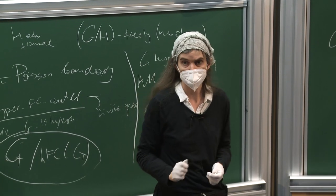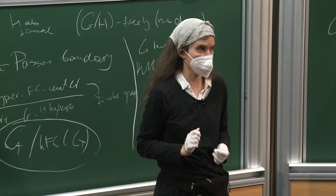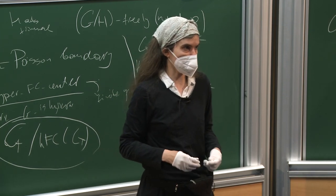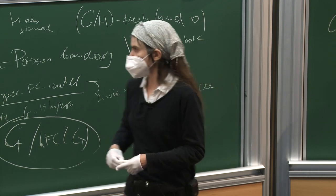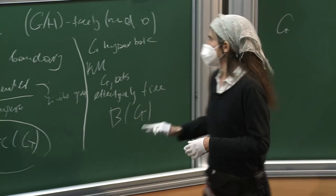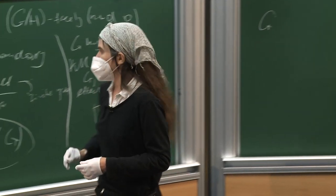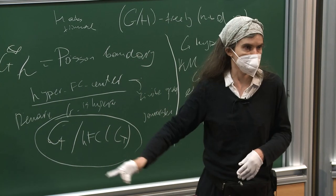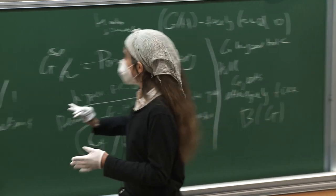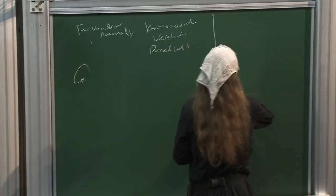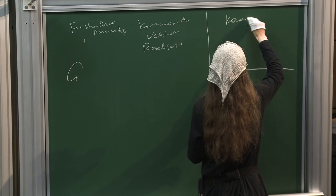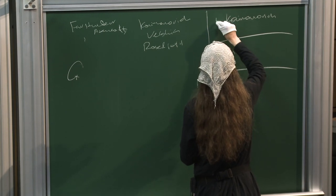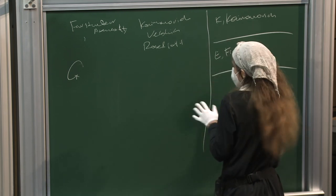Among the things I will explain: first, some joint results with Vadim Kaimanovich, and then results with Josh Frisch and possibly other results as well. The old theorem says that G is amenable if and only if there exists a non-degenerate measure mu — non-degenerate meaning the support generates the group — such that the Poisson boundary of G with mu is trivial.